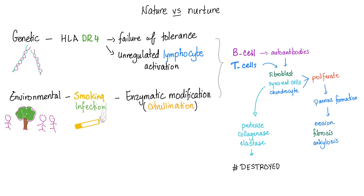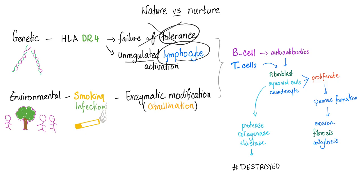Nature versus nurture — the old philosophical argument. Rheumatoid arthritis has both genetic and environmental components. Genetics: HLA-DR4. There is failure of self-tolerance — the body no longer tolerates itself. This is the autoimmune basis of the disease, with unregulated lymphocyte activation.